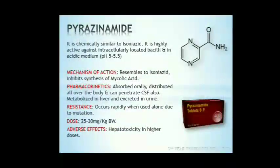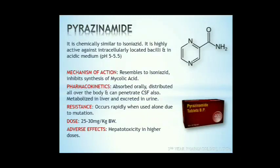Next, pyrazinamide. It is chemically similar to isoniazid. It is highly active against intracellularly located bacilli and acts best in acidic medium at pH 5 to 5.5. The mechanism of action resembles isoniazid — it inhibits mycolic acid synthesis by interacting with fatty acid synthesis. The drug is absorbed orally and widely distributed in the body; it penetrates CSF also. It is metabolized in the liver and excreted in urine. Resistance develops rapidly when used alone due to mutation. The dose is 25-30 mg/kg body weight. Adverse effects include hepatotoxicity when given in high doses.